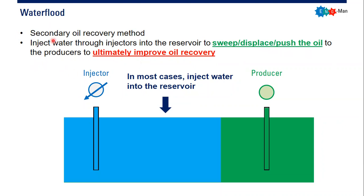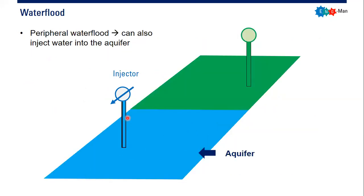So we inject water through the injectors into the reservoir to sweep, displace, and push the oil to the producers — to ultimately improve oil recovery. In the schematic, we have the injector here injecting water into the reservoir, and then the oil will be produced from the producers. In most cases we inject water into the reservoir, especially if we have a pattern water flood.